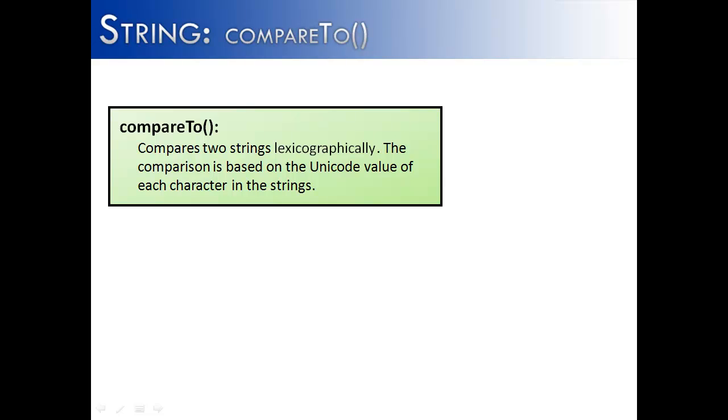The definition of the compareTo is it compares two strings lexicographically. The comparison is based on the unicode value of each character in the strings. Unicode is the way that the computer decides an A is going to be 65 or a B is going to be 66. It just says this symbol is associated with this number. But the more important word that I want to look at is lexicographically.